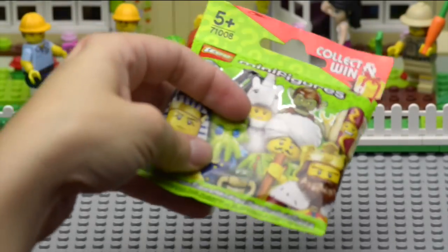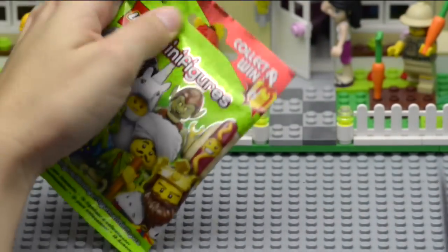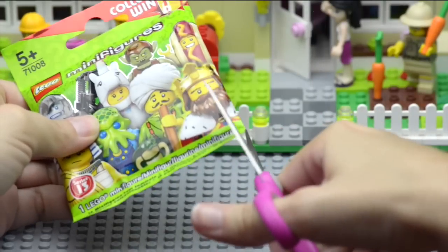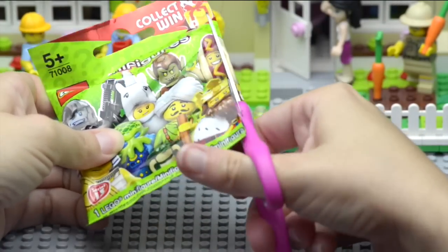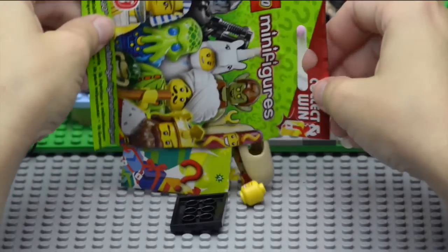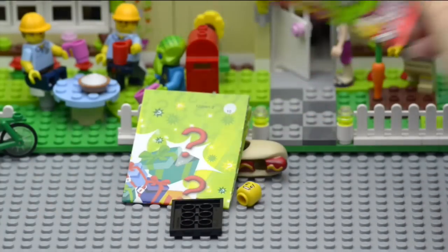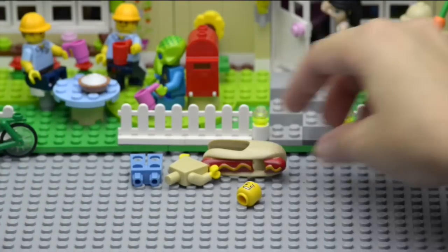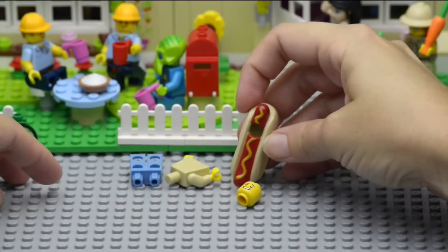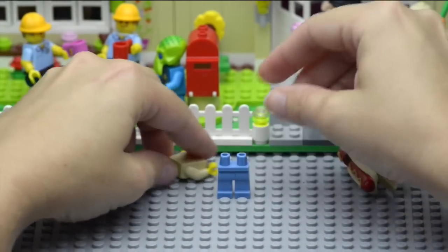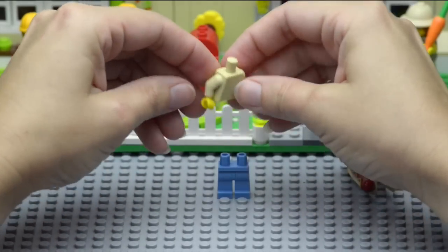So here's our first bag and we are going to give it a shake so that we don't cut any of the pieces and snip snip it open. And what have we got in here? It's hard to see but I can see a hot dog. This is the hot dog man. I must admit when you feel the outside of the bag you're pretty sure if you've got a hot dog man or not.